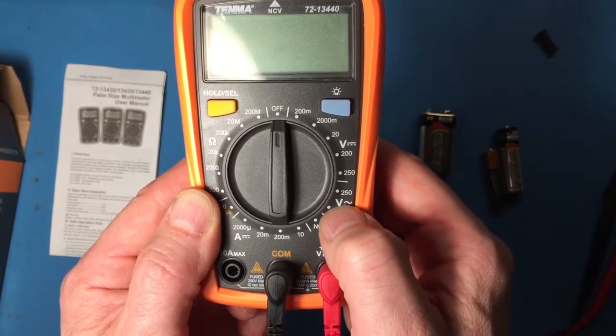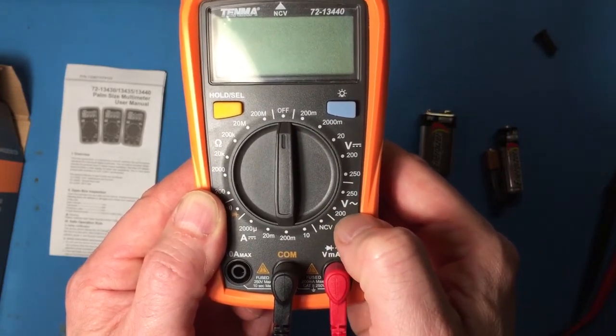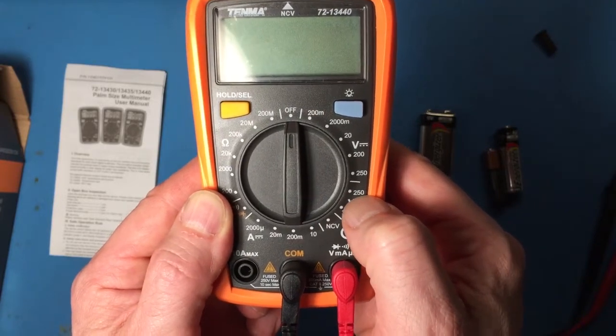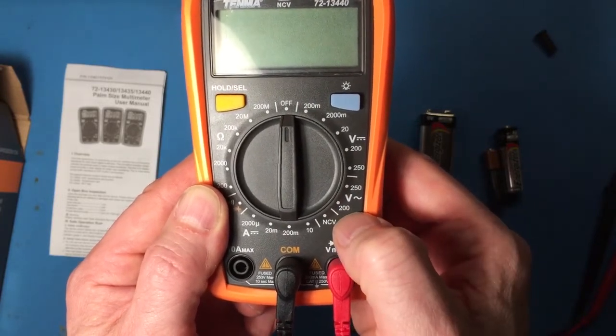So if we want to measure AC voltage, it's the V with the little sine wave symbol next to it. We have two ranges, 250 or 200 volts.